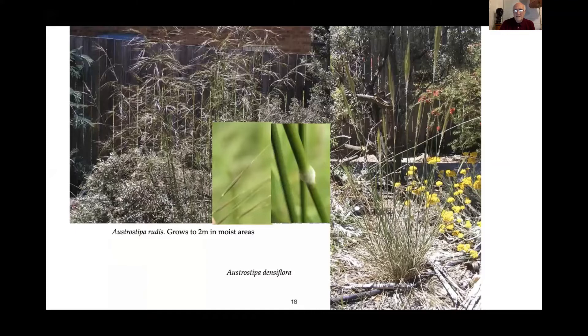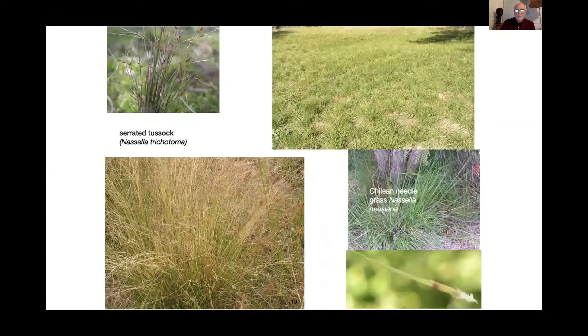There are also some other examples of our native spear grasses — the one on the right is quite spectacular, and the one on the left grows two metres tall, so they're pretty impressive. There are examples of serrated tussock and Chilean needle grass, and Joe is going to talk more about those.